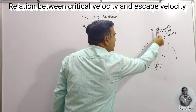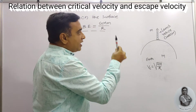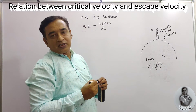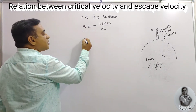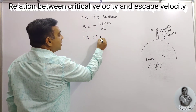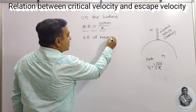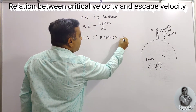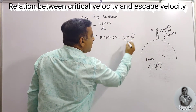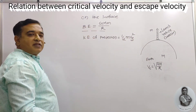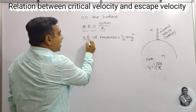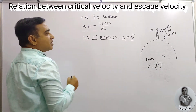While launching the satellite, the kinetic energy of projection is very important and it totally depends upon the escape velocity. The kinetic energy of projection is given by KE = ½m·ve², where ve is the escape velocity of the satellite from the surface of the earth.